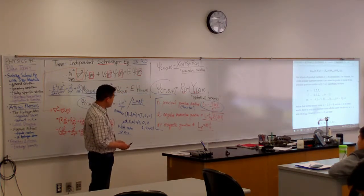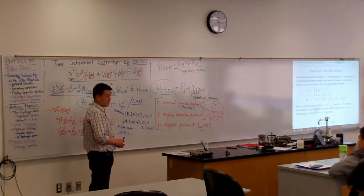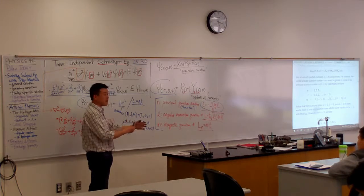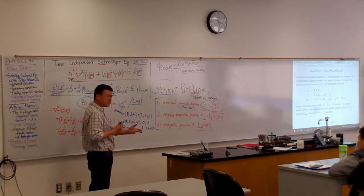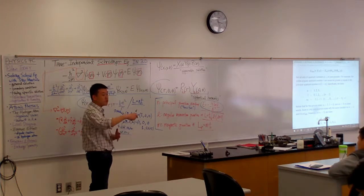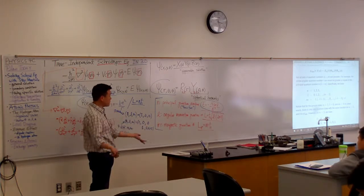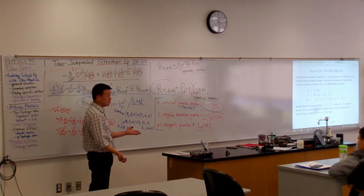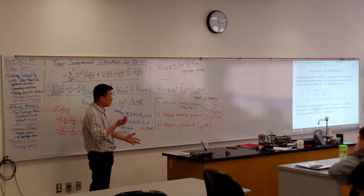These are what's called the degenerate states, or they call it degeneracy, where multiple states have the same energy. This is something new. You can only get degeneracy when you have more than two dimensions in your problem. With one dimensional setup, you will never get a degenerate state. If two wave functions look different, they also have different energy.